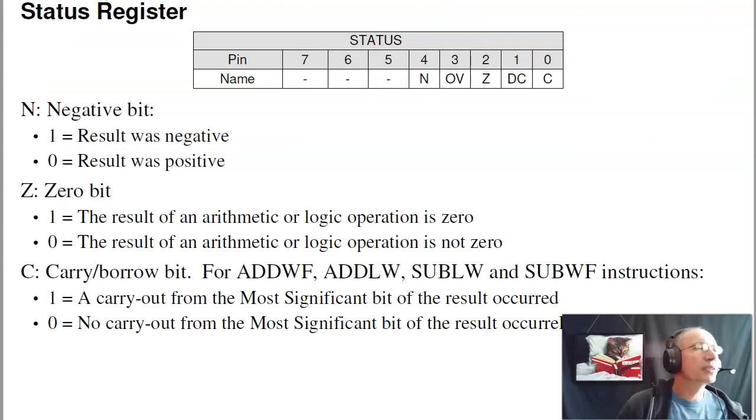Before we do a couple of sample codes, there's a thing called the status register. This is important in assembly. This keeps tracks of the previous commands. If the previous operation was negative, the n bit is set. If the previous instruction was zero, the z bit is set. If there was a carry, like the answer is bigger than 255, the carry bit is set. So sometimes they have to use those to do different operations.